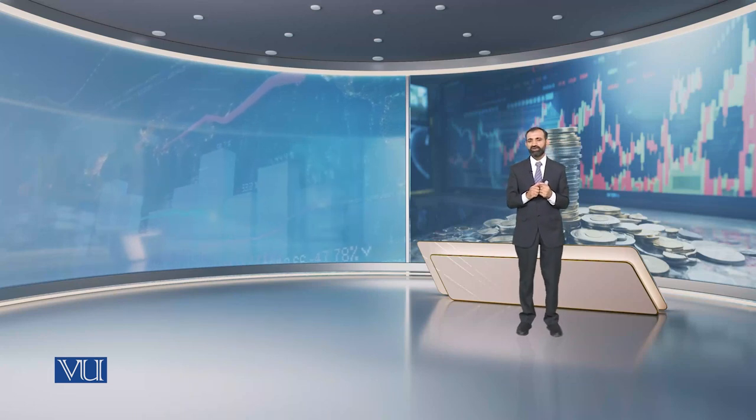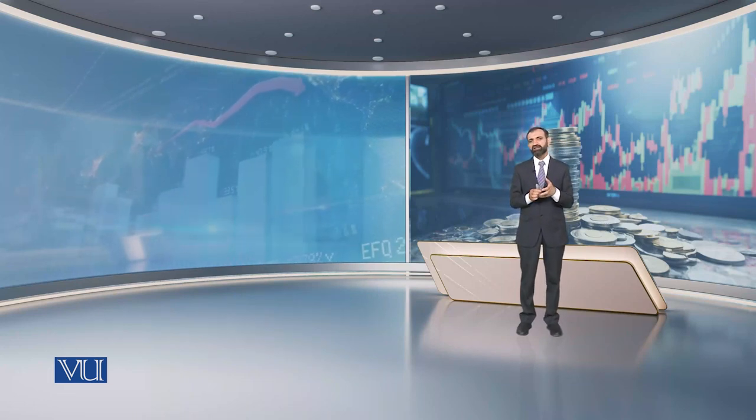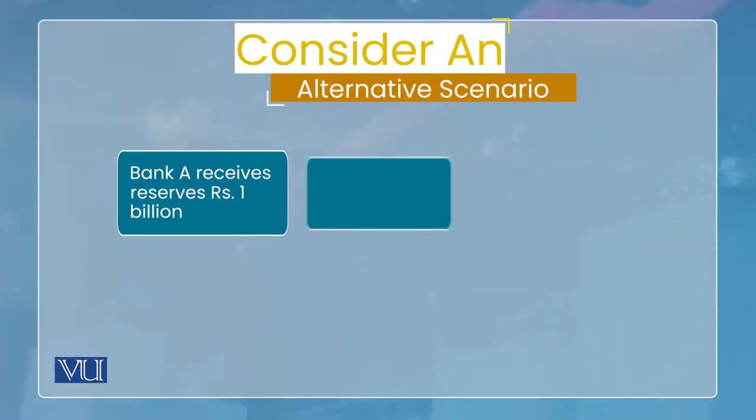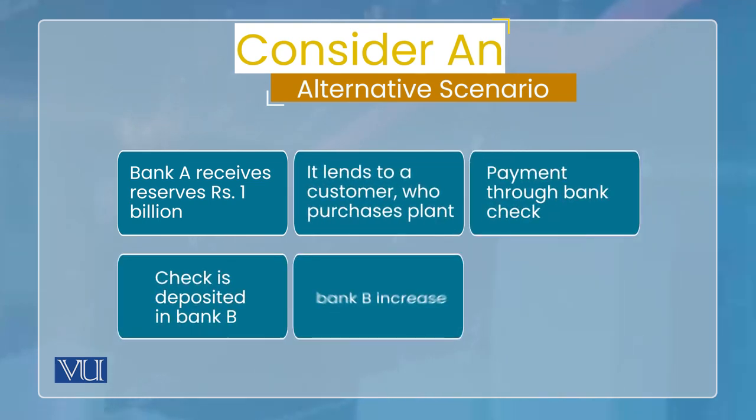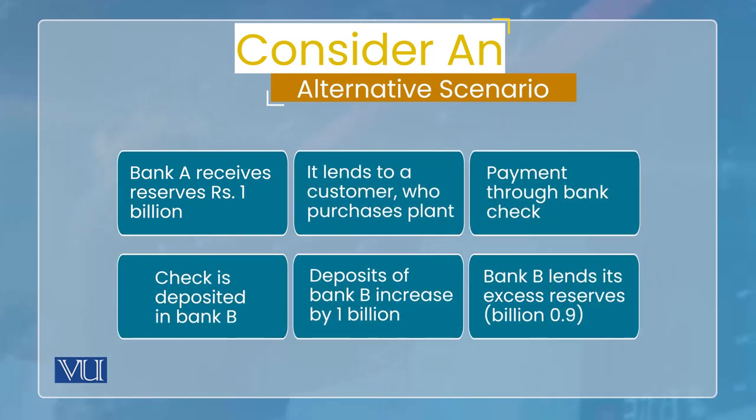For example, one assumption we took is that all payments happen through checks. If that were not the case, the result would be different. Second, we assumed that no bank wants to hold excess reserves. If that is not the case — if banks want to hold excess reserves — we discuss these kinds of scenarios and see whether multiple deposit creation remains at the same level as in the previous example or becomes less.